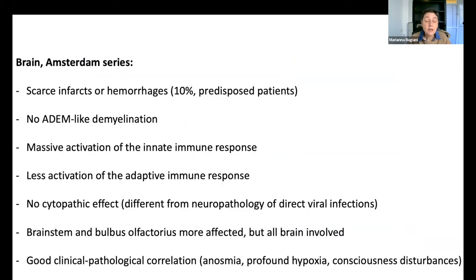So in our series of 64 patients, we found no demyelination, very scarce infarcts or hemorrhages in the brain only in predisposed patients, a massive activation of the innate immune response with less activation of the adaptive immune response, no cytopathic effect — different from what we see, for example, in varicella zoster encephalitis — and no direct damage of the virus to the cells. The brainstem and the bulbus olfactoris are usually more affected, but all brain is involved. There is a very good clinical-pathological correlation with anosmia, profound hypoxia, and consciousness disturbances.